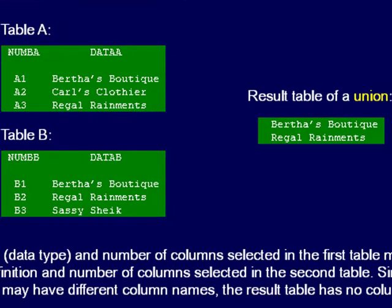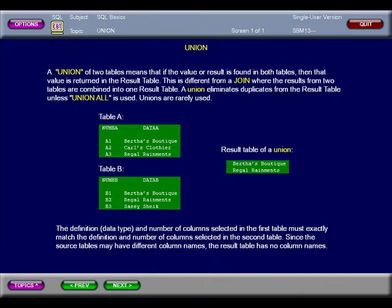A table union gives results where each row in one table matches the values in another table. This is different from a table join where the selected data from two tables are combined into one result table. Duplicates are eliminated unless union all is used.